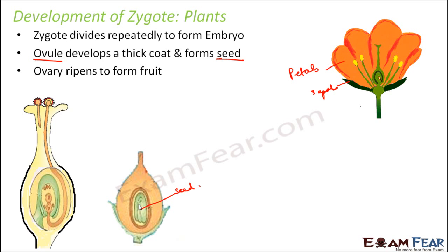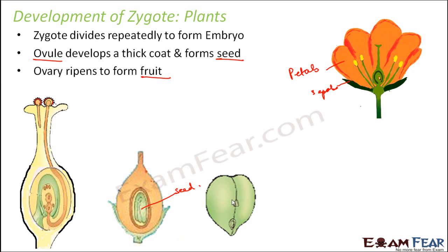The ovary ripens to form the fruit. The entire spherical structure which was the ovary forms the fruit. The fruit generally has a fleshy covering known as pericarp. So outside the seed you have the fruit, which is actually the ovary. To summarize: ovary becomes the fruit, ovule becomes the seed, and the zygote becomes the embryo.